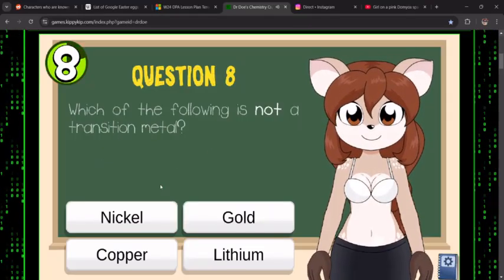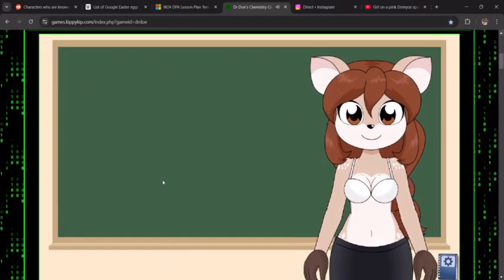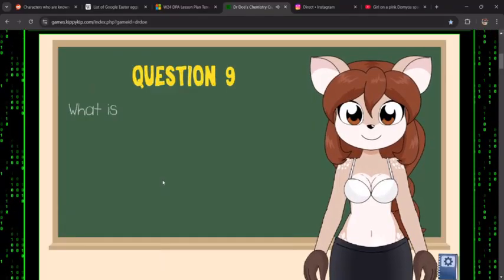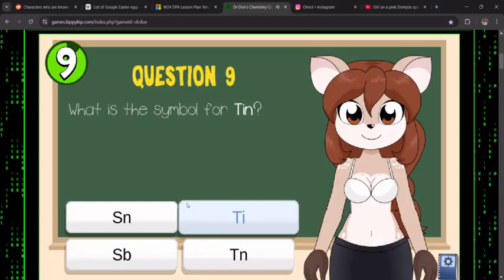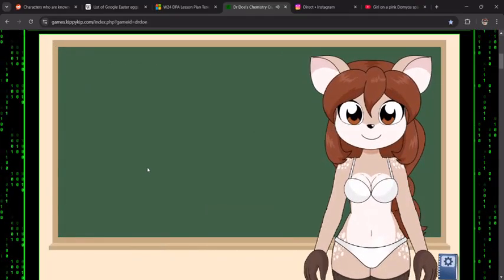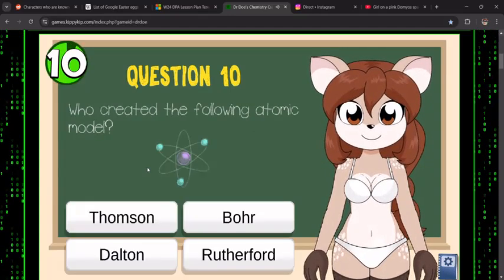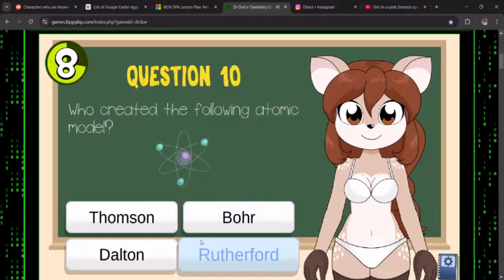Which is not a transition metal? Let's say... well that's easy, Sn. Okay, question 10: who created the falling atomic model?